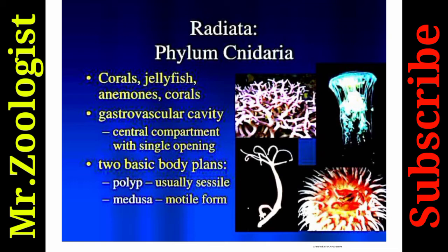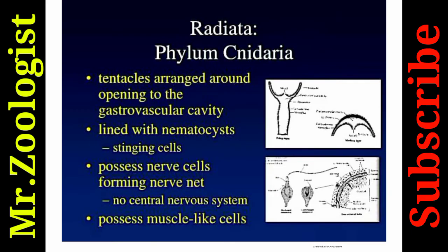Radiata or Phylum Cnidaria includes corals, jellyfish, and anemones. A gastrovascular cavity is present — a central compartment with a single opening. They have two basic body plans: polyp (sessile) and medusa (motile). Tentacles arranged around the opening to the gastrovascular cavity are lined with nematocysts — stinging cells containing poison that can paralyze prey. They possess a nerve net but no central nervous system, and muscle-like cells.